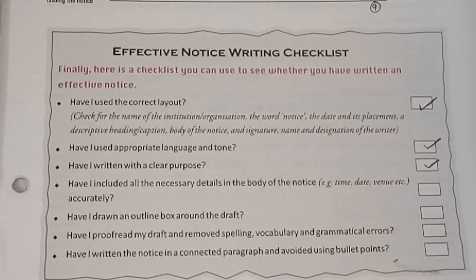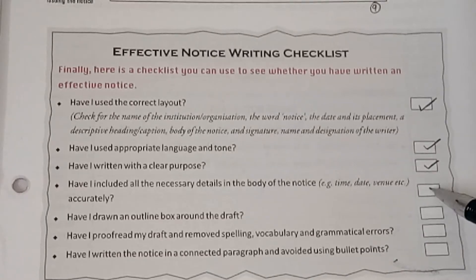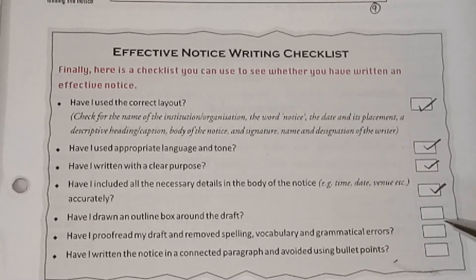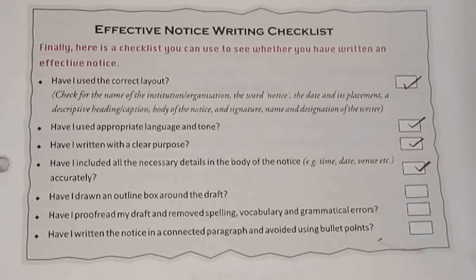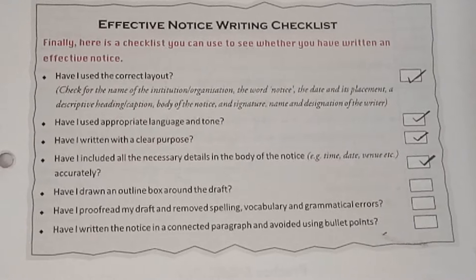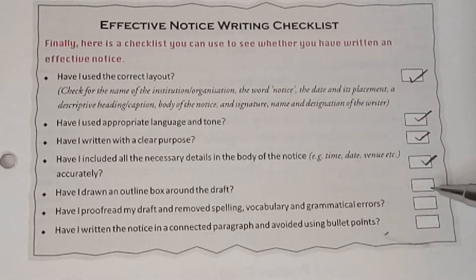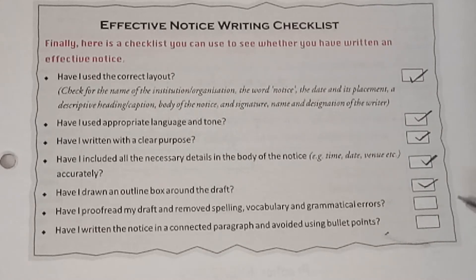Then, have I included all the necessary details in the body of the notice? That is — date, time, venue, and whatever details are needed. Have I put all those things there? Then put a tick over there. This is for your rough side — note down these points so that you can assess your notice after writing it. Also check: have I drawn an outline box around the draft? I told you about number nine — you have to see the notice box at the beginning and at the ending also.